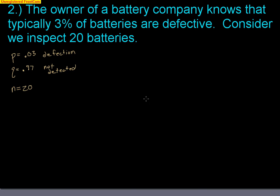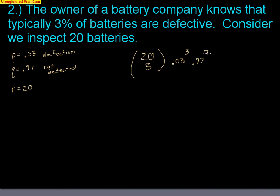Now I could ask a million questions here. For example, I could say: what's the probability that exactly three of them are defective? Hopefully by now you'd know I have to do 20 choose 3 to figure out how many different ways I could have three defective batteries. That would be 0.03 to the third for three successes, times 0.97 to the 17th for 17 non-defective batteries, and find your answer. Use the shortcuts on the calculator — simple.